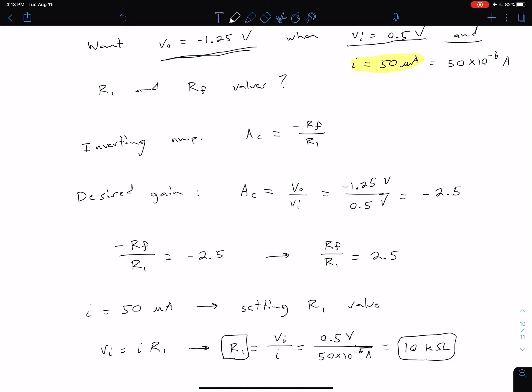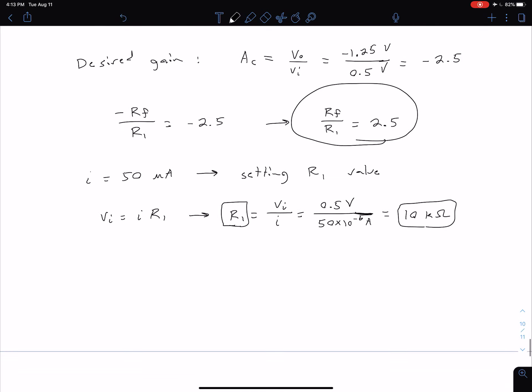So now we can come back up to this equation here. Knowing our R1 value, we can find the value for RF. So we can say RF is then going to be equal to 2.5 times R1. So that's just 2.5 times what we found in the previous line, which is 10K for R1, which is going to give us 25 K Ohms.